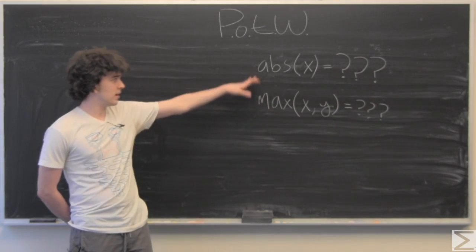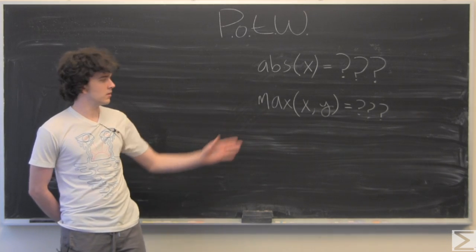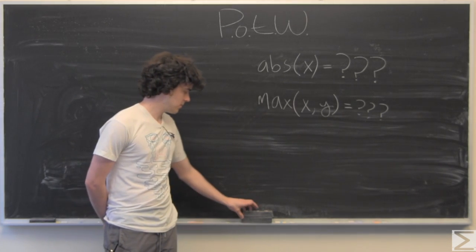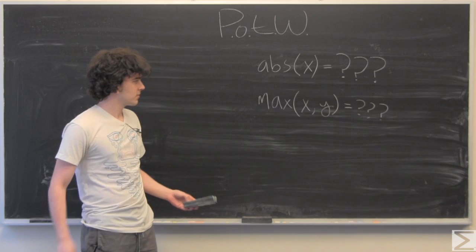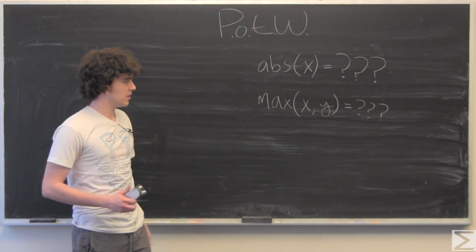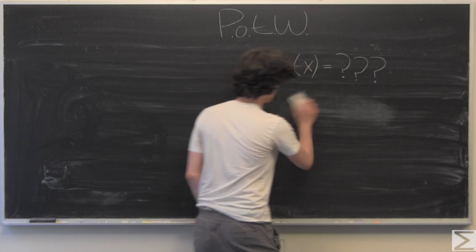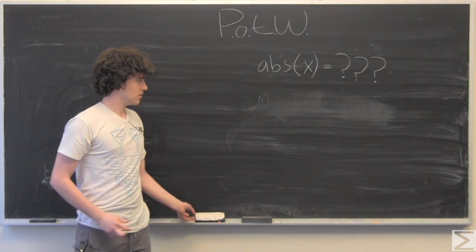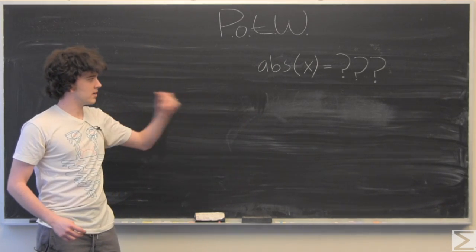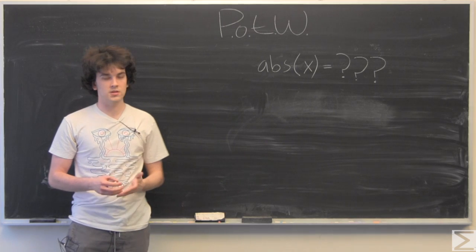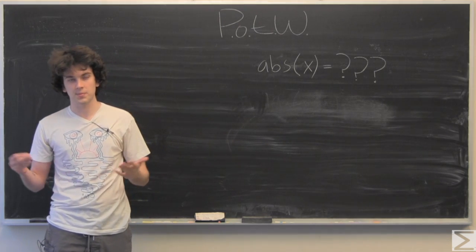We know what absolute value is and we know what the maximum value, maximum number in a set of two numbers is, almost intuitively. The absolute value is just the number with its sign removed, made positive.